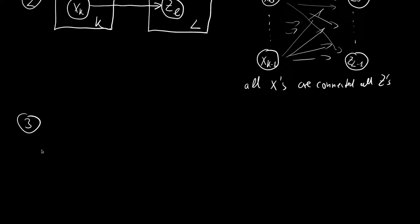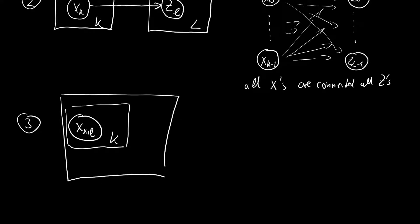Next example, we will look at nested plate notation. So we have an x index k and small l. And this is in a plate with k and in a bigger plate with l. And we have a z outside. And this is then the following. Essentially, we just take the combinations of all k's with all l's and they go to one z. This is as if I have a big plate notation with k times l variables appearing in them.